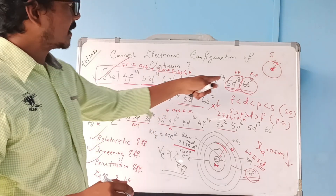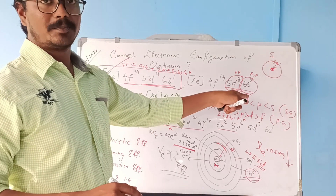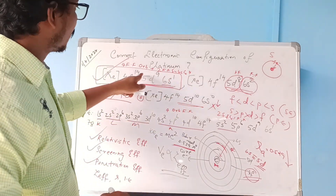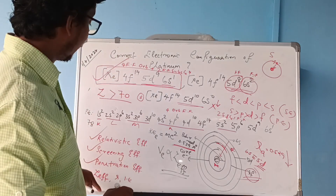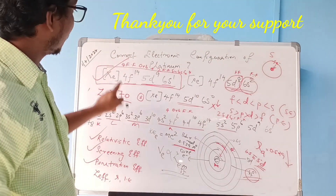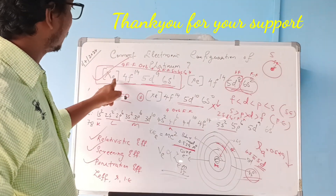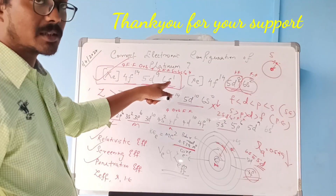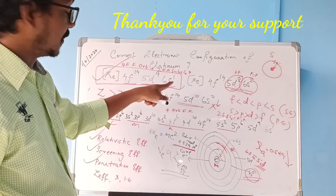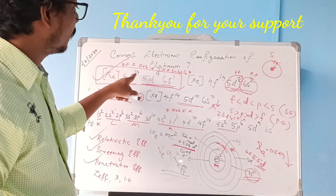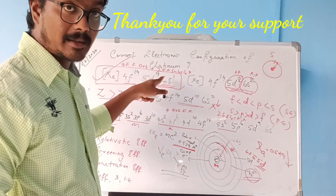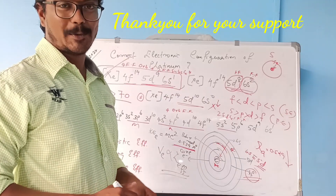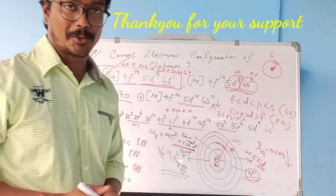Considering all these theories — relativistic effect, screening effect, and penetration effect — we have finally found that the actual electronic configuration of platinum is xenon 4f14-5d9-6s1. Thank you.